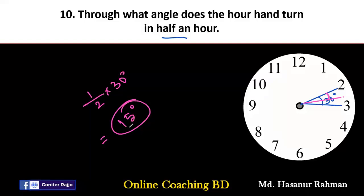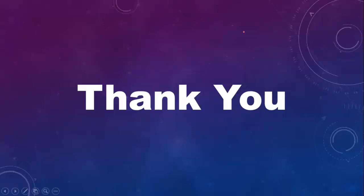To summarize: in one hour, the minute hand completes 360 degrees, the hour hand completes 30 degrees, and in half an hour the hour hand completes only 15 degrees. I hope you understood this chapter properly. Thank you very much for watching this video. See you soon on the next video. Allah Hafiz.